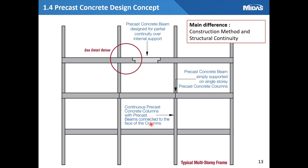As mentioned earlier, the most significant difference between reinforced concrete and precast concrete design is the continuity of structure. Precast concrete beam is designed for partial continuity over internal support as a single member. So in this case, it is necessary to analyze the boundary condition by setting the pin condition at both ends. Some members are supported as a single member and there are members where it is continuously connected. When designing members and planning their layout, this should be considered when analyzing the entire member system.